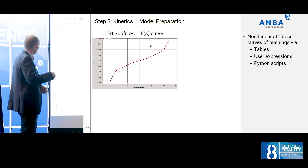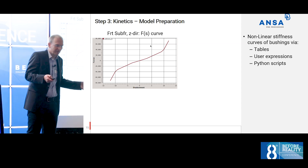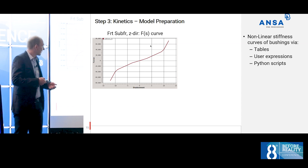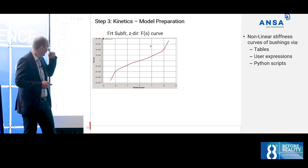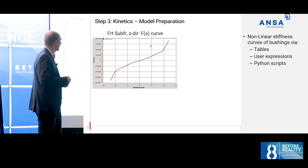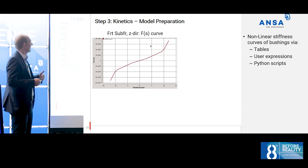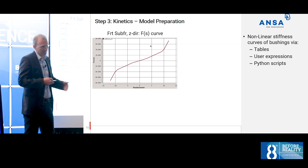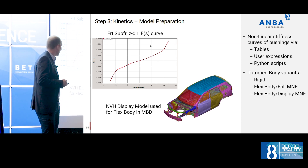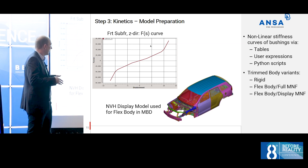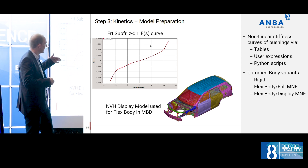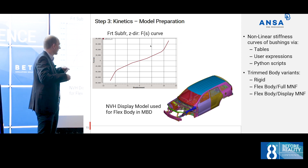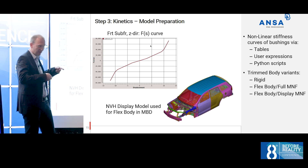This is a very important curve: it is a non-linear force-deflection curve for one subframe mount going into the system. We are very flexible in how to get these curves into kinetics — we can use tables, expressions, or even Python scripts for very fancy stuff. We also use the display model, but of course we have variants: a rigid body for the trim body and an MNF file with the full model in order to compare.